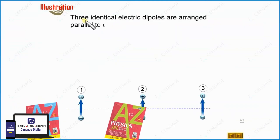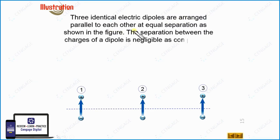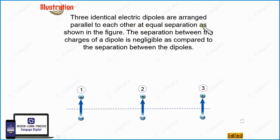In this illustration, we are given three identical electric dipoles arranged parallel to each other — 1, 2, 3 — at equal separation as shown in the figure. The separation between dipole 1 and 2 is the same as the separation between 2 and 3. The separation between the charges of each dipole is negligible compared to the separation between the dipoles, so we can apply the formula of the electric dipole.